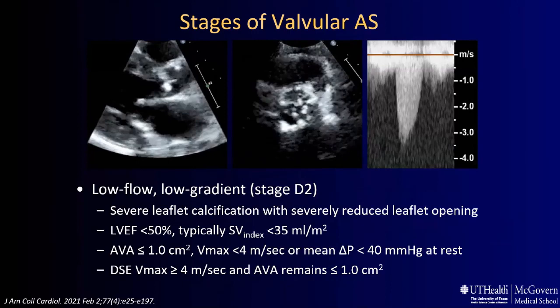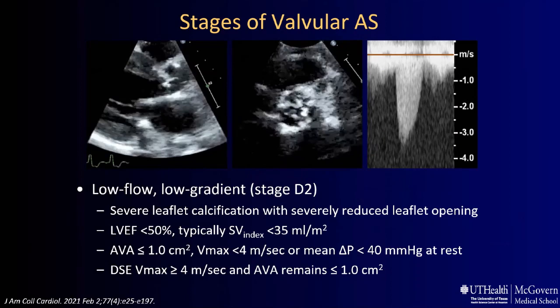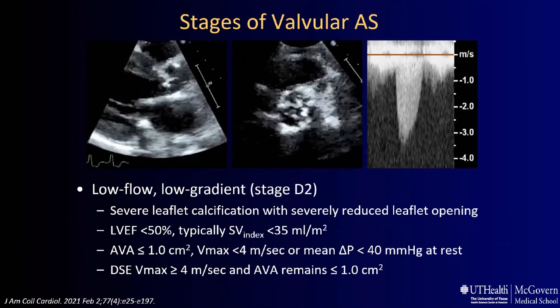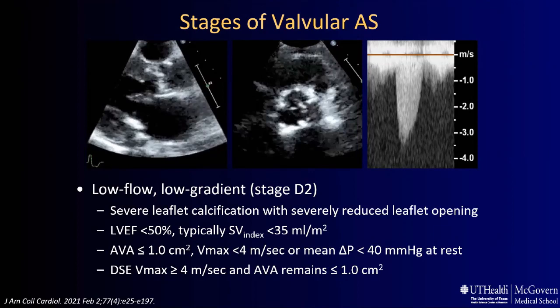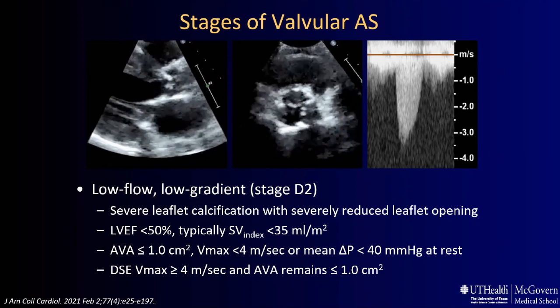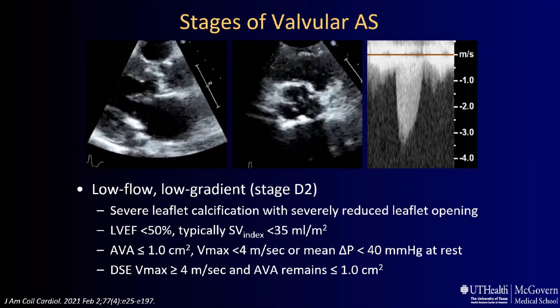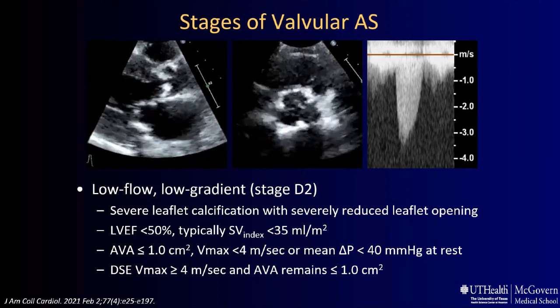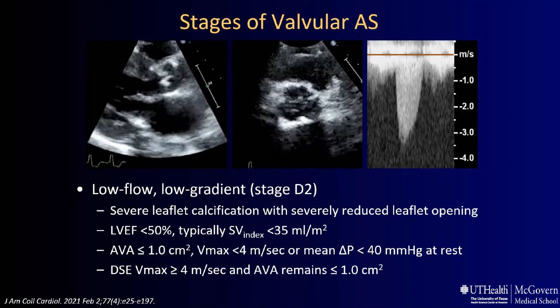Stage D2 is the classic low-flow, low-gradient aortic stenosis with reduced left ventricular ejection fraction, typically associated with a stroke volume index of less than 35 mL/m². However, getting an aortic valve area of less than 1 cm² with velocities that do not meet criteria for severe aortic stenosis could also be due to incorrect LVOT measurements, LVOT pulse wave Doppler measurements, or a patient who is severely hypertensive at the time of image acquisition. All those things need to be checked before making a diagnosis of low-flow, low-gradient AS.